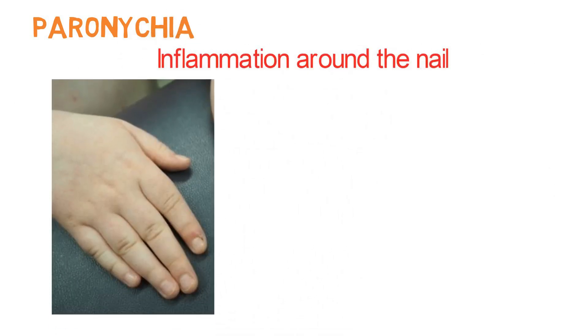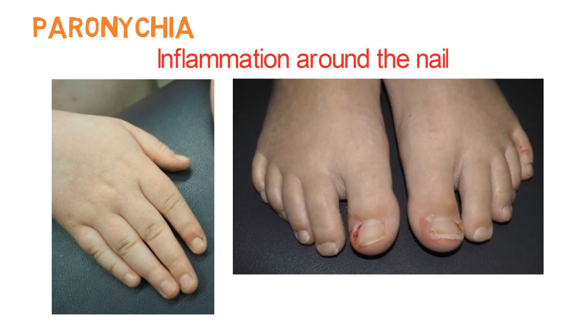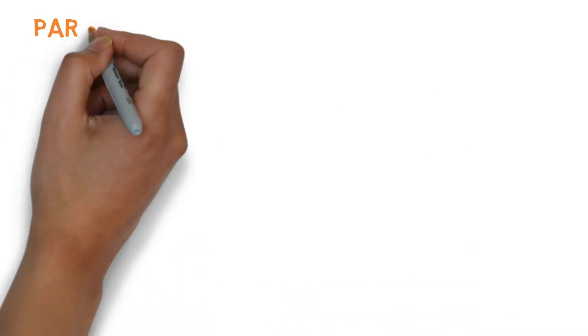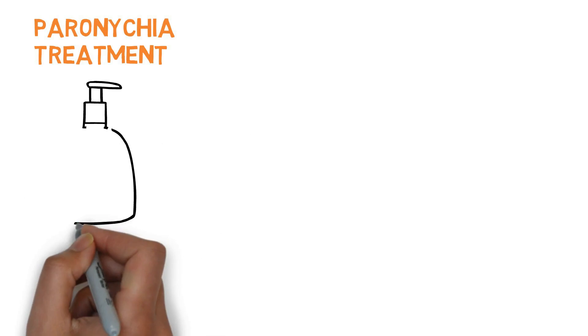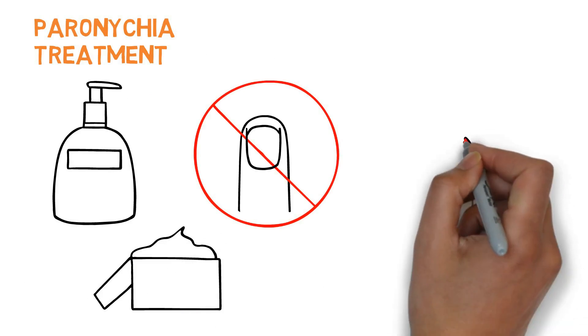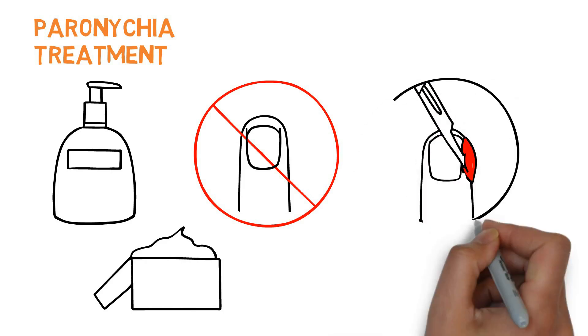Paronychia is inflammation around the nail. It can be identified by redness, swelling, or cracked skin around the nails. Sometimes infection goes along with this inflammation. To treat paronychia, counsel your patients on nail care and refer to our video on tips for nail care for more details. You should also examine the nail to rule out acute infection or abscess, which would require oral antibiotics or incision and drainage.